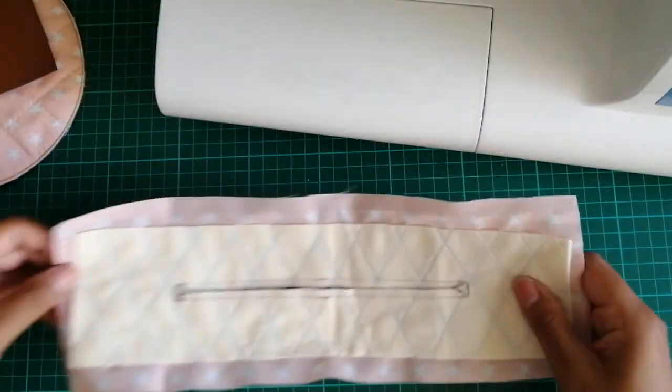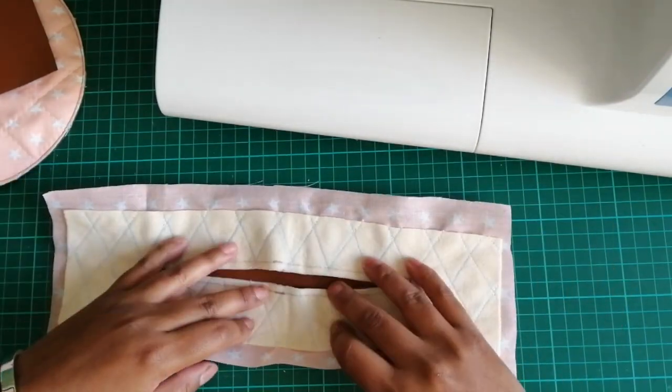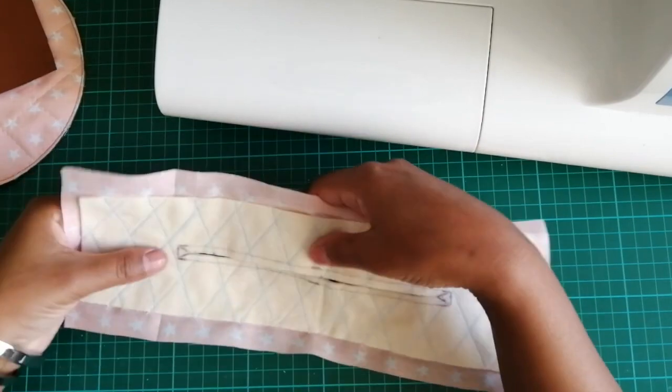For the zipper section, I placed the lining piece on top of the outer material right sides together, making sure the opening was aligned properly, and then I sewed around the zipper markings.